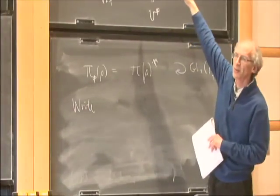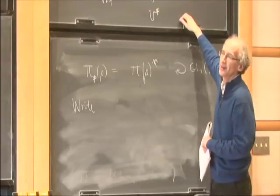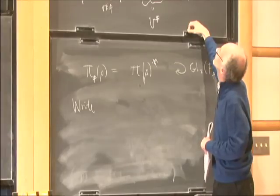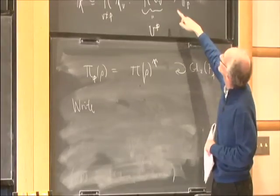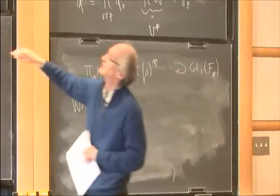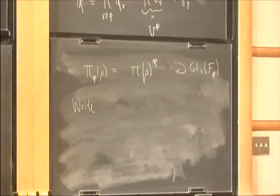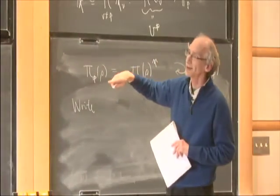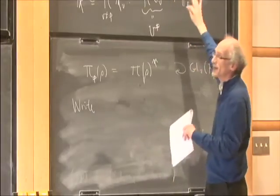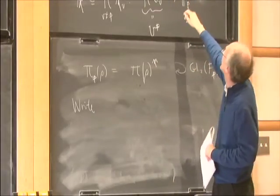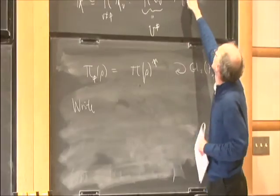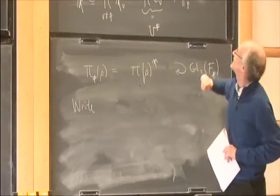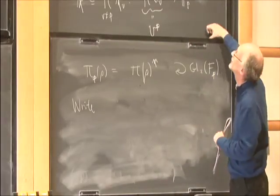So this is all auxiliary stuff. The character is defined in terms of the local data: if v doesn't divide p, then chi_v equals 1. I've just defined some open compact subgroup away from p and some character based on the local data.